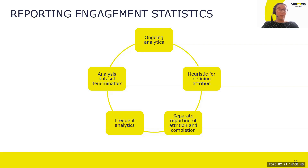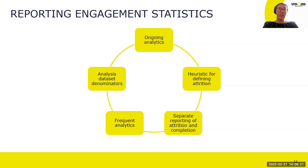How do we report engagement statistics? Analytics should be ongoing, beginning as soon as accrual can usefully be analysed, and should be based on an explicit analysis data set that includes attrition — always considering the denominator to any statistic presented. You need to create a heuristic for attrition based on the number of administration periods since a participant last completed a survey, which will vary by study depending on disease context, treatment, and participants. Reporting should be frequent since engagement can change quickly, and attrition and completion should be reported separately, connected to pre-planned contingencies.